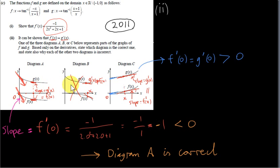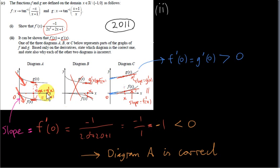A good tip: in questions where you're given graphs and need to decide based on derivatives, look at x equals 0. Very often that's the only x value you can easily evaluate to determine the sign of the derivative. You might not know the exact value of the derivative for other x values, but at 0 you can calculate it directly and check whether the slope is positive or negative.